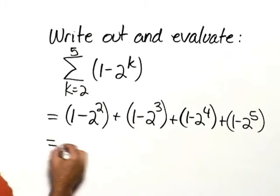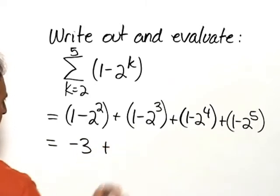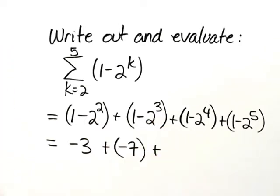Let's evaluate each of those. 2 squared is 4, 1 minus 4 is negative 3. Then we have plus, 2 cubed is 8, 1 minus 8 is negative 7.